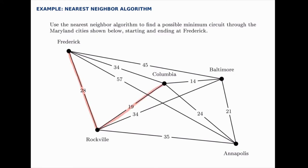At this stage we have the options of 14 miles to Baltimore, 24 to Annapolis, or 34 up to Frederick. So we'll take 14 over to Baltimore — that's the shortest step at this point.